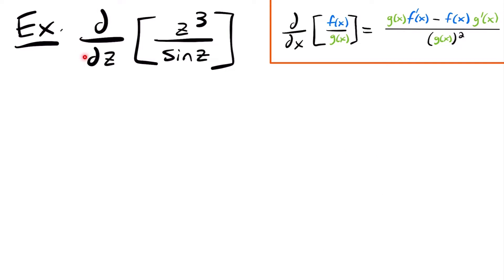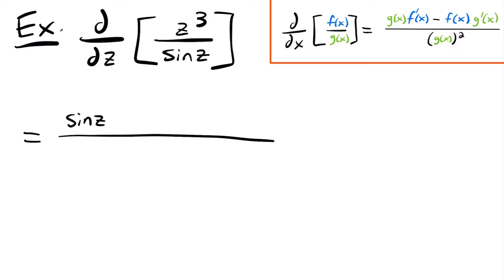Next let's look at the derivative with respect to z of z cubed divided by sine z. Let's quickly identify what our two functions are that we are taking the quotient of. We have z cubed as our top function, our numerator, and we have sine z as our denominator function or our bottom function. These will each correspond to our f of x and g of x in our formula. So the derivative here is going to be equal to our bottom function, sine z, multiplied by the derivative of the top.